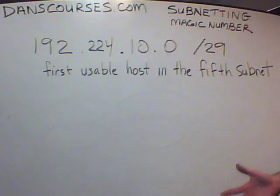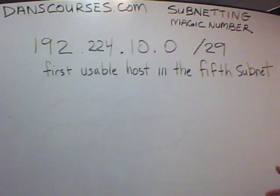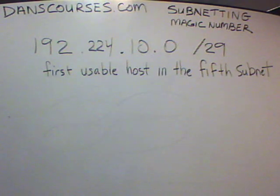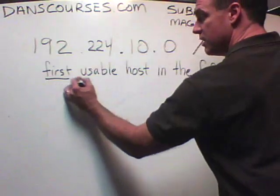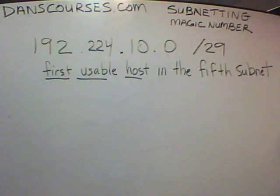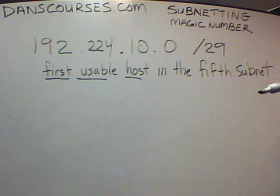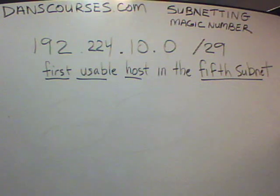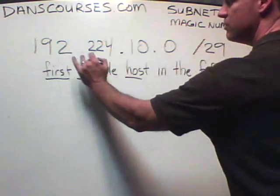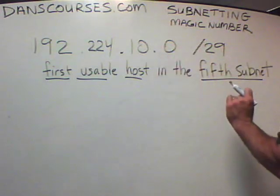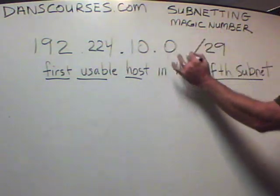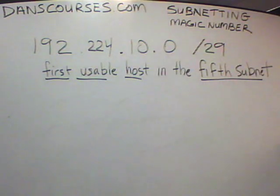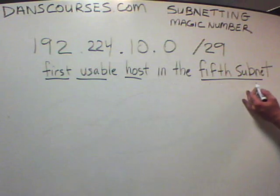Here's a question that you're going to see in the CCNA. You're the administrator and you need to assign a router a static IP address. It needs to be the first usable host in the fifth subnet. The network given is 192.224, the 10.0 network, and it's been subnetted from a slash 24 to a slash 29. So who is the first usable host in the fifth subnet?